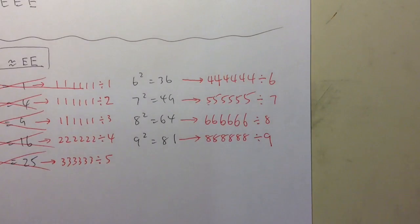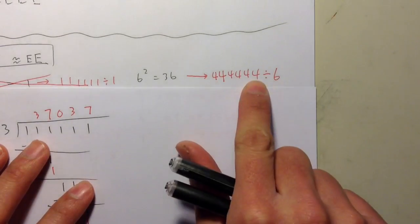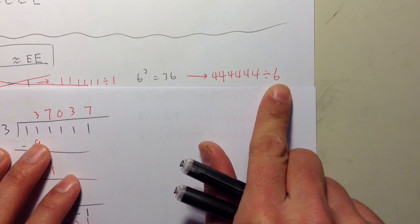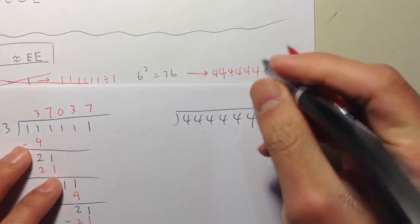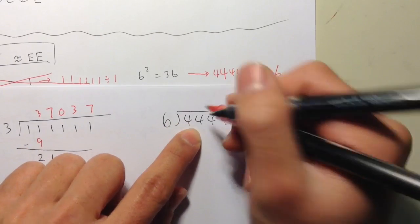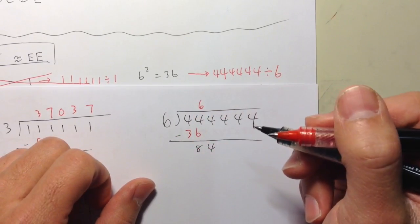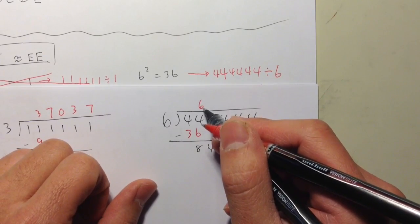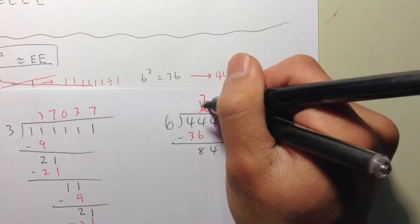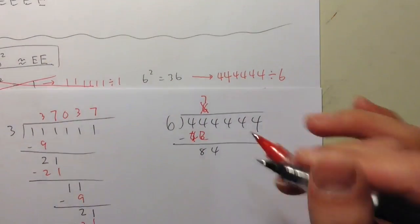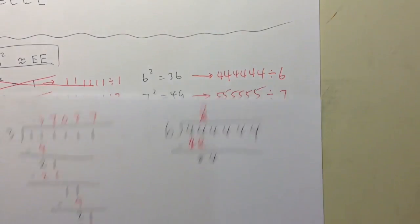Let me check 444444 ÷ 6. It's even and the digit sum is divisible by 3, so it is divisible by 6. Doing the division: 6 goes into 44 seven times (7×6=42), but wait — I need the first digit of the quotient to match A, which should be 6. But 6 goes into 44 only 7 times, not 6. Since these two digits need to be the same, I can rule this out as well.